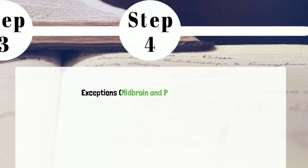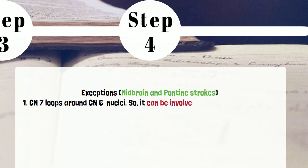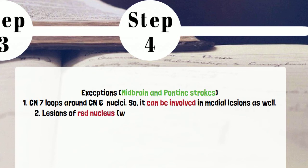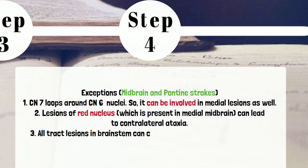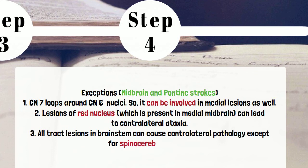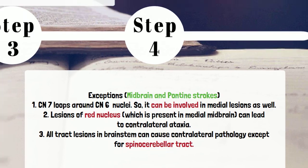Exception 1: Cranial nerve 7 loops around the cranial nerve 6 nucleus, so cranial nerve 7 can be involved in medial lesions as well. Exception 2: Lesions of the red nucleus, which is present in the medial midbrain, can lead to contralateral ataxia-like features. Exception 3: All tract lesions in the brainstem cause contralateral pathology except for the spinocerebellar tract, which causes ipsilateral pathology.